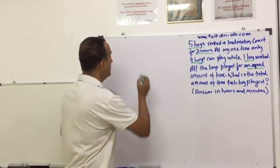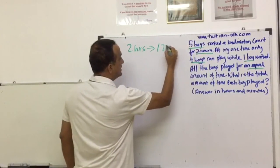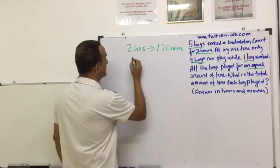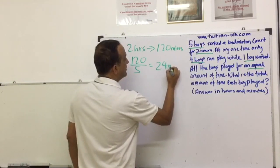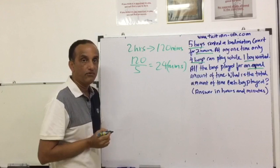So that means five boys waited. Let's look at two hours now. Two hours is actually 120 minutes, and there are five boys who waited. So 120 minutes divided by five, you have 24 minutes. Each boy waited 24 minutes.